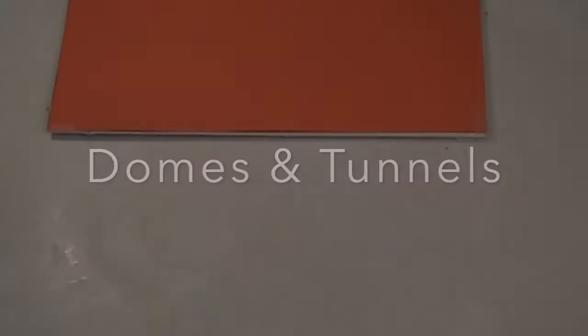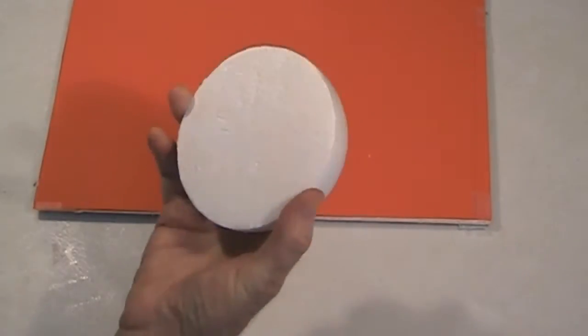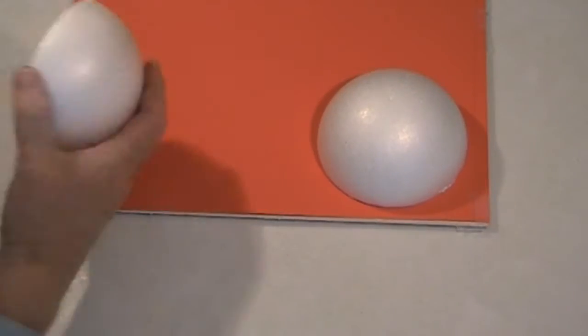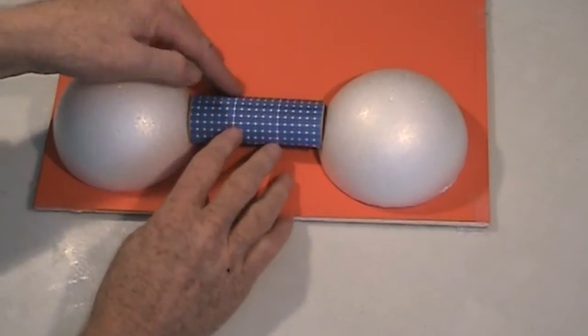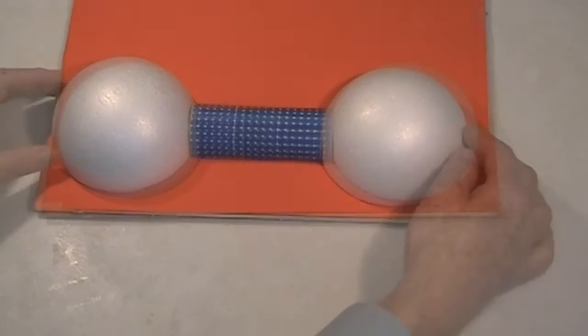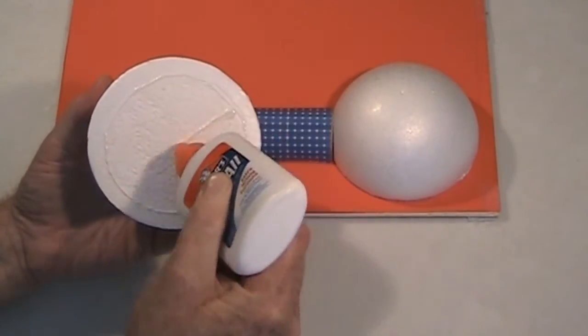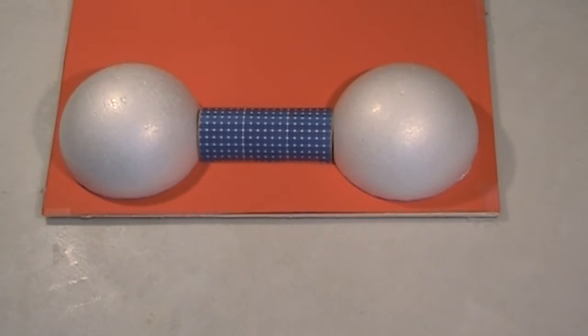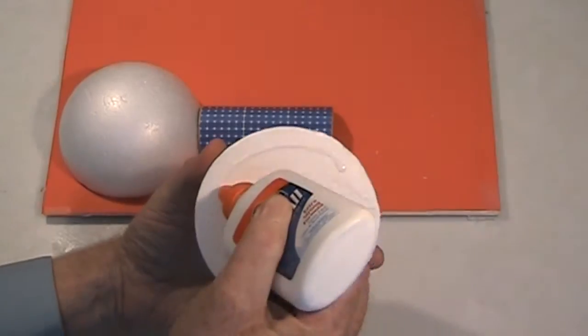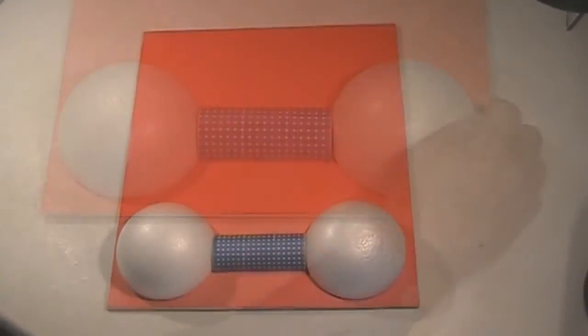And now for the domes and tunnels. On Mars, you'll have to live in domes to protect you from the elements and to keep the air inside. So, let's put these two styrofoam balls down on the board. And now we put a connecting tunnel in between. Now, to glue it down, just put one bead of glue around and maybe make an X in the middle. That's plenty. And we'll do that for the other side as well. Just a round once and then an X in the bottom.